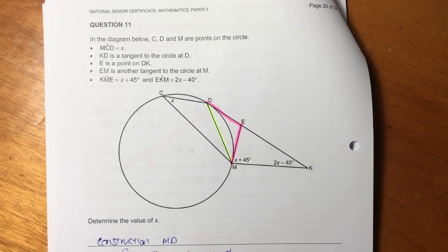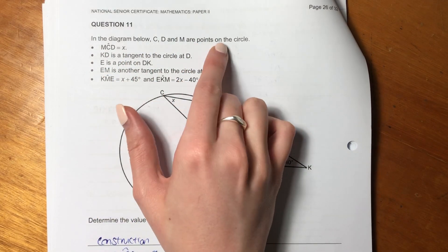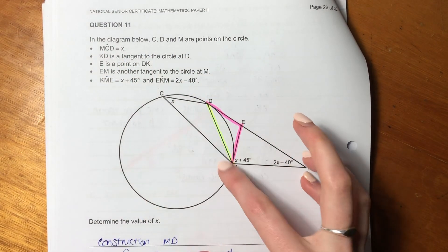Hey guys, so we're looking at question 11 now. Again, a bit of geometry, but it says in the diagram below, C, D, and M are points on the circle.